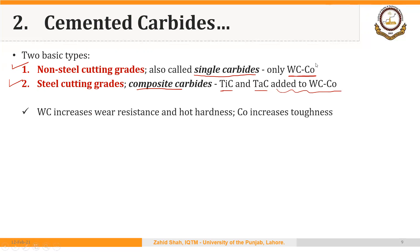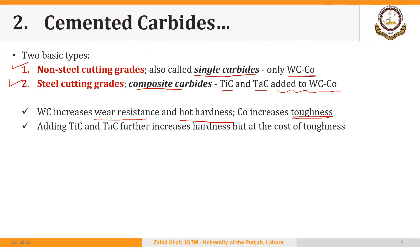Steel cutting grades are also called composite carbides because titanium carbide and tantalum carbide are added to tungsten carbide and cobalt. Adding tungsten carbide in general increases wear resistance and hot hardness. Increasing cobalt increases toughness. We have to make a trade-off depending on whether we need higher wear resistance and hot hardness or higher toughness. Adding titanium carbide and tantalum carbide further increases hardness but at the cost of toughness.